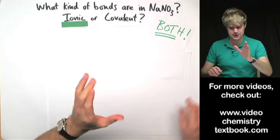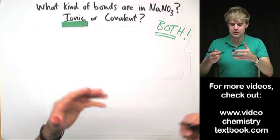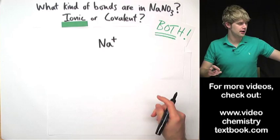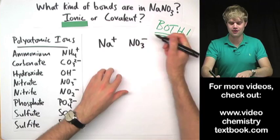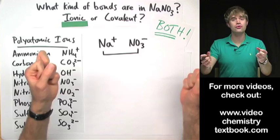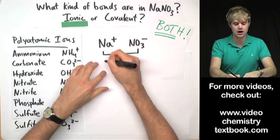So if you're thinking ionic, you may have been reasoning that sodium, Na, can form a 1 plus ion, and you may have recognized NO3 from the list of polyatomic ions. It's a polyatomic ion known as nitrate, and it has a charge of 1 minus. And so the Na plus and the NO3 1 minus, because they have opposite charges, will stick together just like magnets because of ionic bonds.